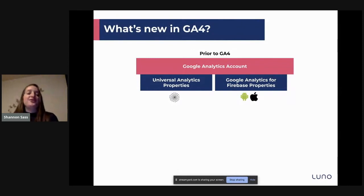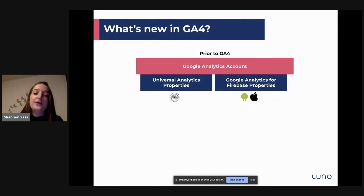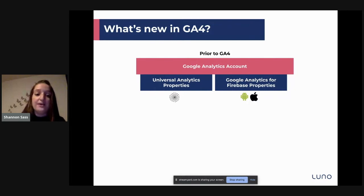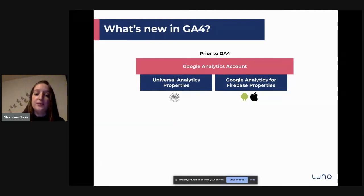So to get started, what's new in GA4? Prior to GA4, you would have your Google Analytics account, which is basically just a folder. Within this folder, you can have different properties. You have the Universal Analytics property, and that was a web-only property. A property is something where your online data gets stored to be used for Google Analytics.